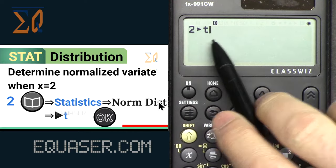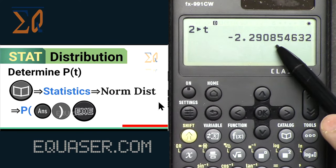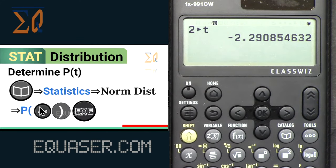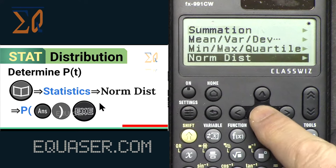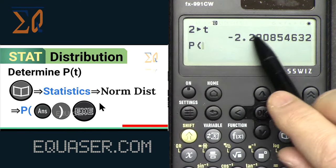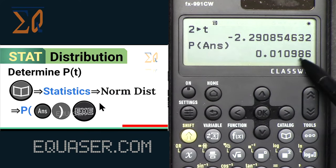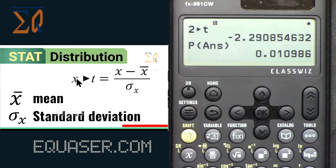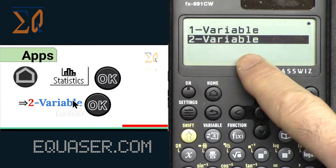The data is fed into t — press OK and here is the calculated result of t. Now to find P(t), press Catalog, Statistics, Normal Distribution, and this time select P. To input the result of t, press Answer — this brings the previous result — then press Equal. That gives the P(t) value. This is essentially the equation: t = (x − x̄) / σ, where everything was computed from our data.